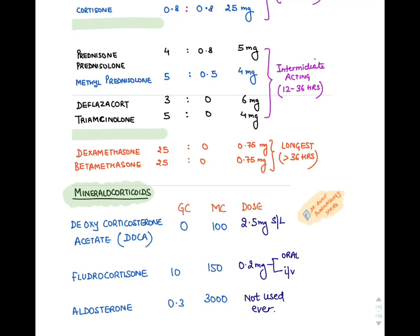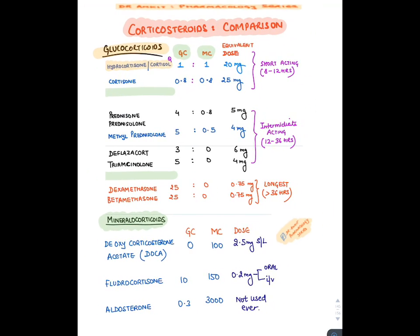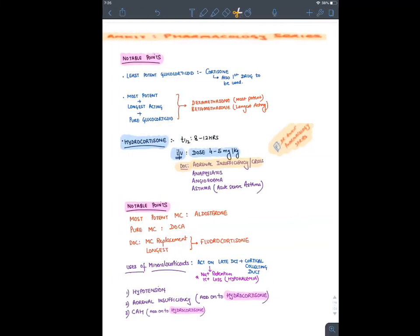Comparing mineralocorticoids: aldosterone is the natural mineralocorticoid and the most potent, with 3000 times mineralocorticoid activity, but it is not used clinically. DOCA (deoxycorticosterone acetate) is a pure mineralocorticoid. The drug used as a mineralocorticoid replacement is fludrocortisone, because it can be given orally as well as IV.